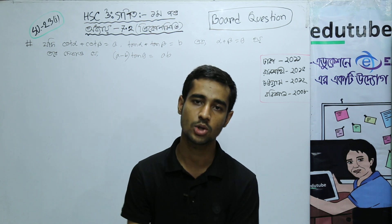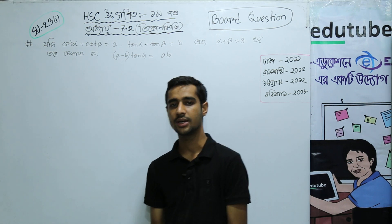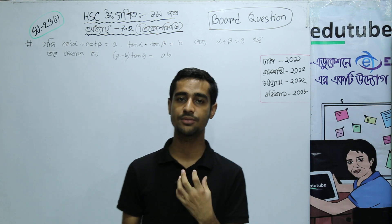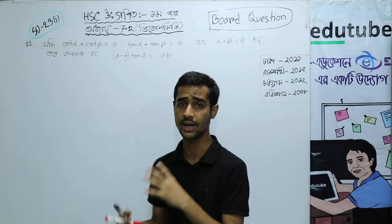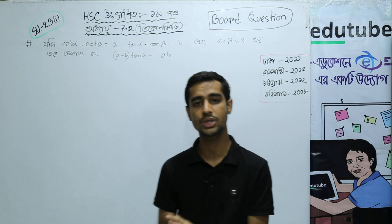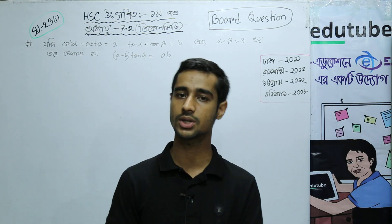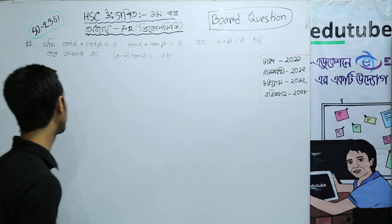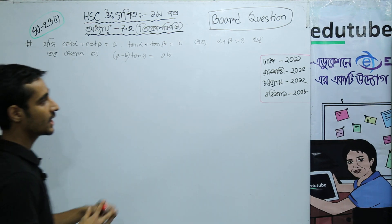Hello everyone, I am Sonet. I am going to tell you about this first paper. There are many questions about A and 7.2. In our question, there are 3 number problems.